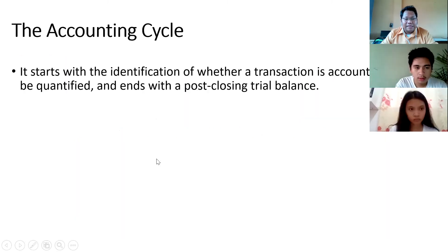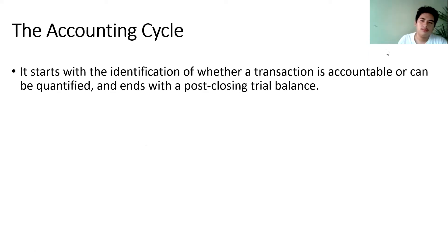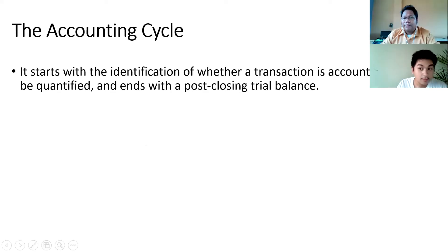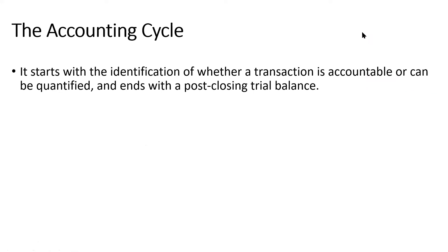The accounting cycle — we start this afternoon with the accounting cycle. The accounting cycle works this way: it starts with the identification of whether a transaction is accountable or can be quantified, and ends with a post-closing trial balance. This post-closing trial balance is already cleared of any form of adjustment.